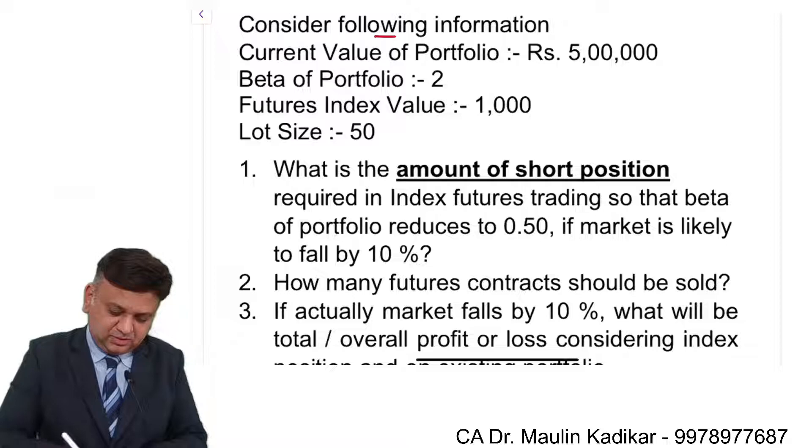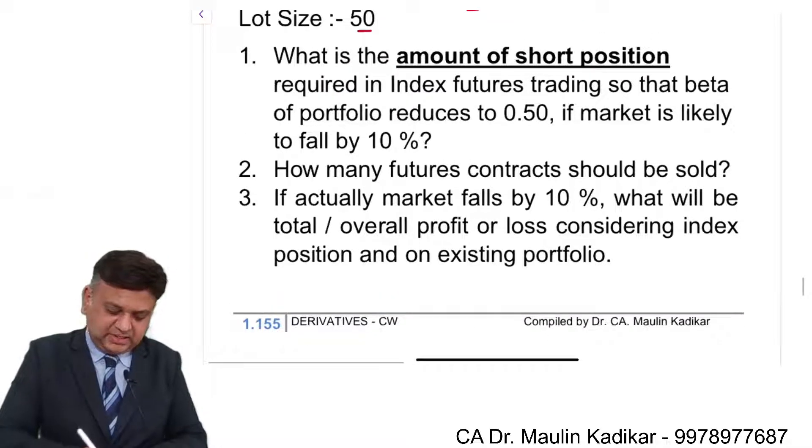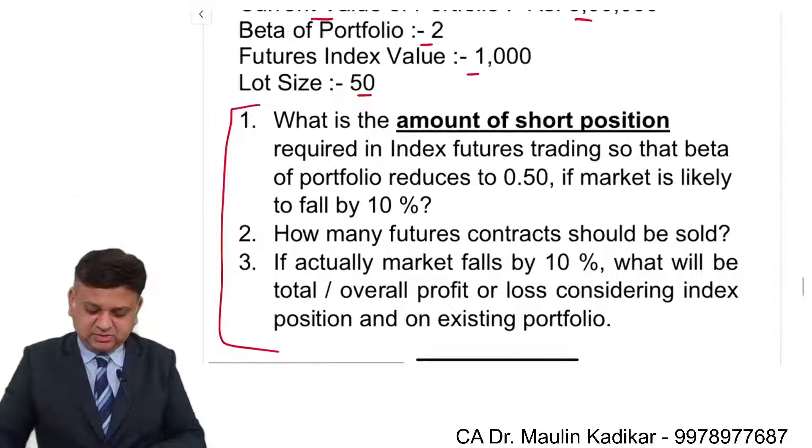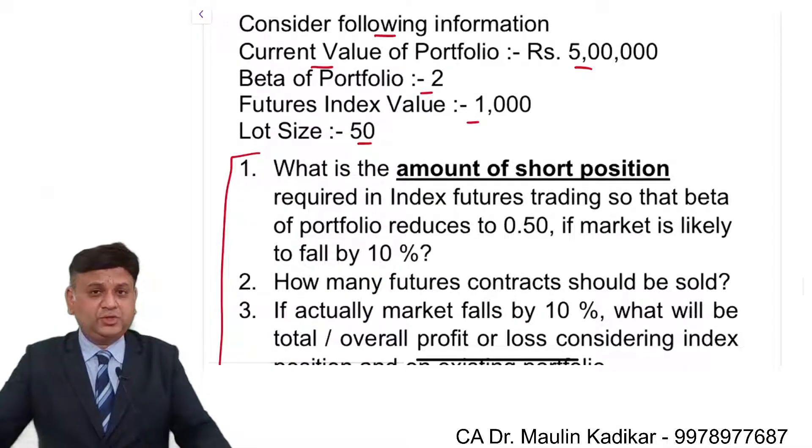Consider the following information: current value of the portfolio is 5 lakhs, beta is 2, futures index value is given. And there are three questions provided to us. I request you to calculate the answer for all three of them and put your answer in the chat box.